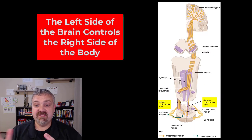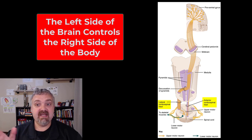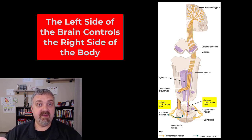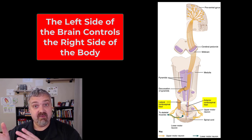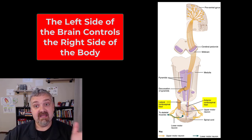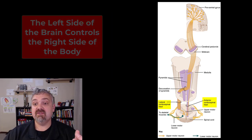So I can show you that here. Notice that in the end, they both do cross over. The lateral corticospinal tract is decussating — crossing — in the pyramids. The anterior corticospinal tract travels down the spinal cord but then crosses over. So remember, the right side of the brain controls the left side of the body, and the left side of the brain controls the right side of the body. Those are your two corticospinal tracts, by far the most important.